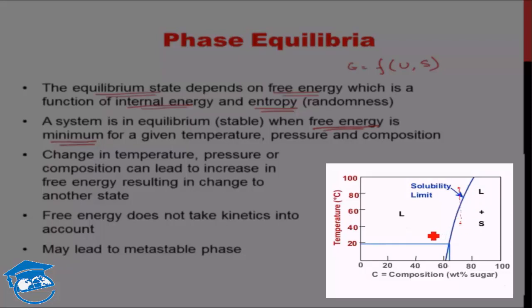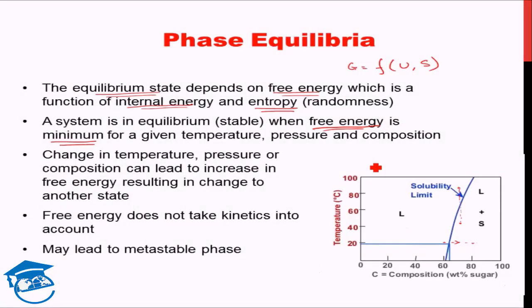Alternatively, imagine you are at 20 degrees Celsius at 60% sugar — a single phase region — and you add more sugar to make it 80%. Again you are changing the free energy state and the single phase free energy state is no longer the lowest. Rather the dual phase region becomes the lowest free energy state. So by changing any of these parameters you change the equilibrium condition, and what exists will always be the minimum free energy state.